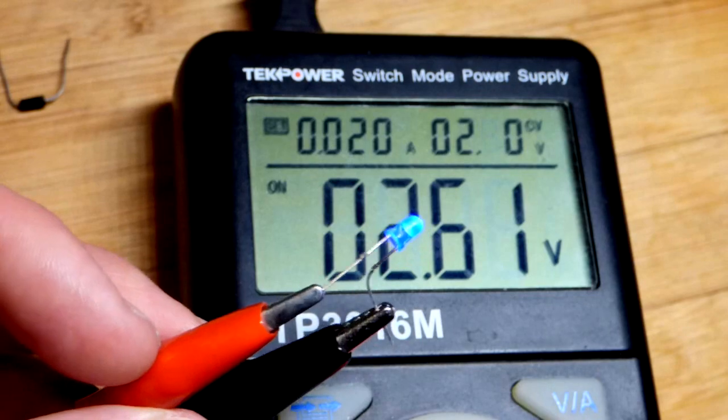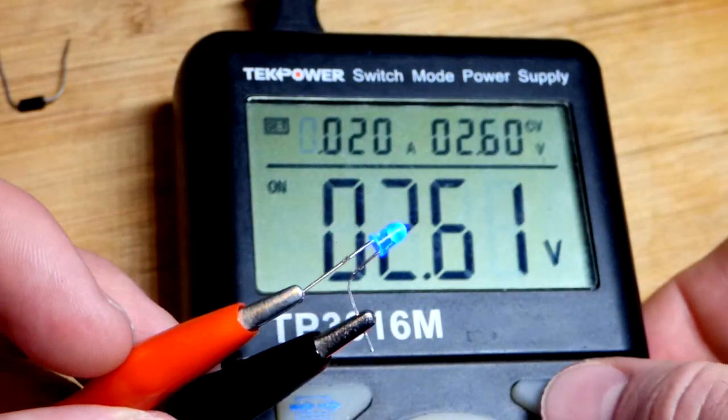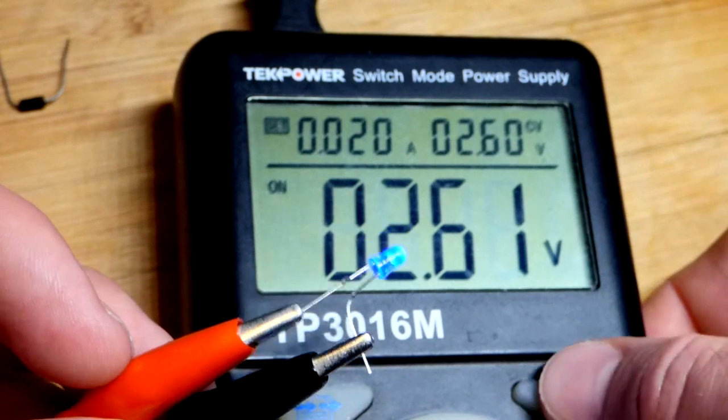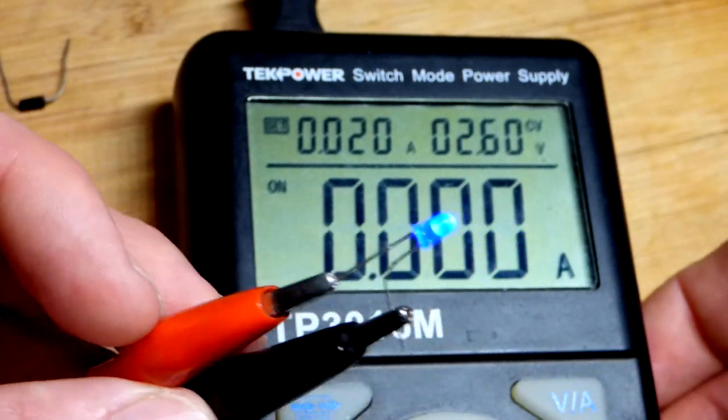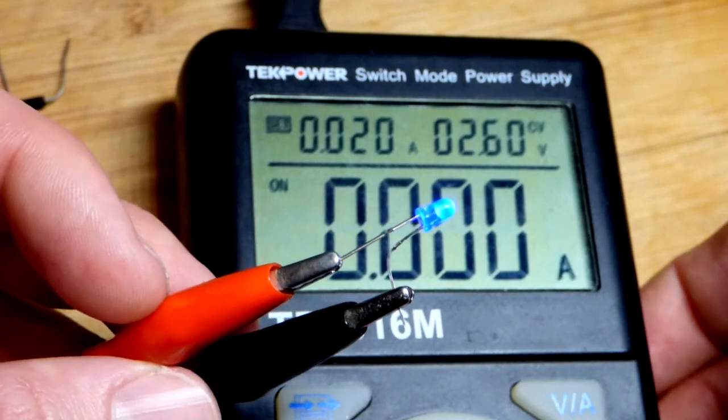So blue LEDs are naturally brighter. It's going to show up with less current. You're going to see the display right there. There we go. So we got less than one milliamp of current, it's already producing a bit of light.